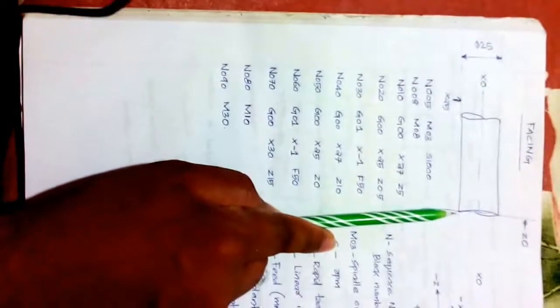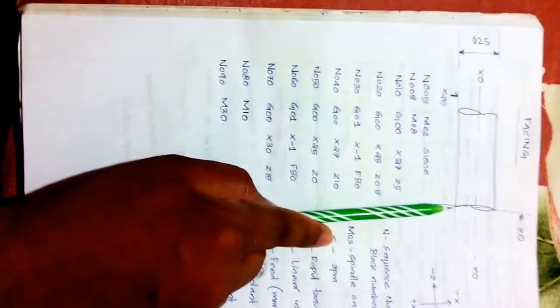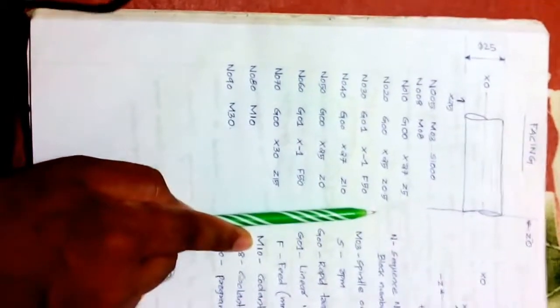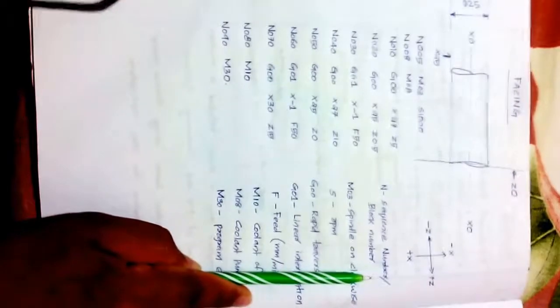After the facing operation, N070: G00 X30 Z15 — the tool moves rapidly to X30 Z15, retracting from the workpiece. N080: M10 — coolant pump off. N090: M30 — program end. This completes the simple facing operation using G00 and G01. Thank you.